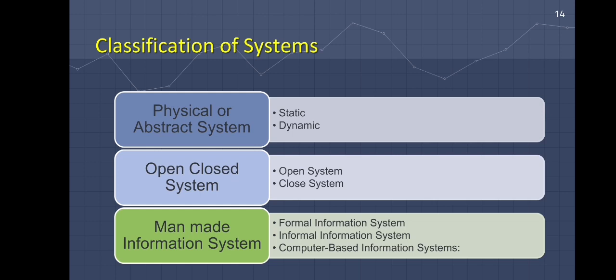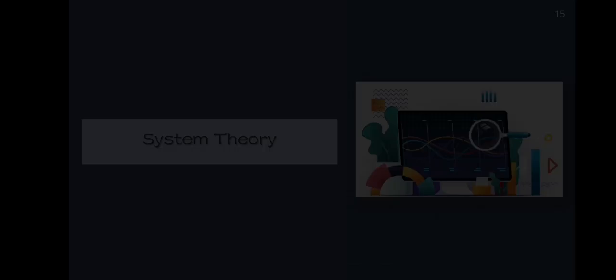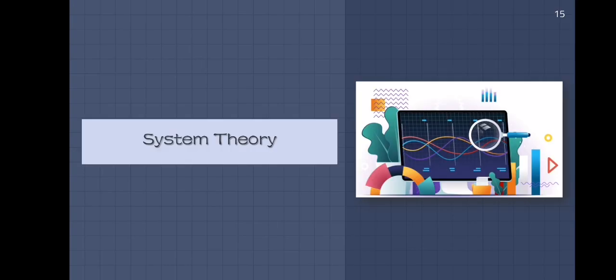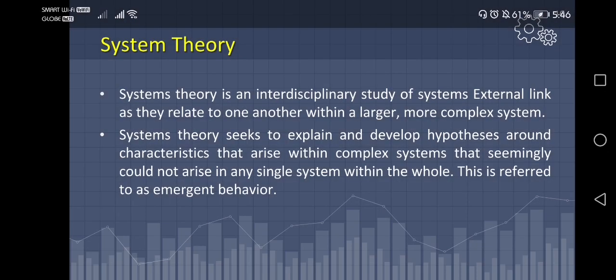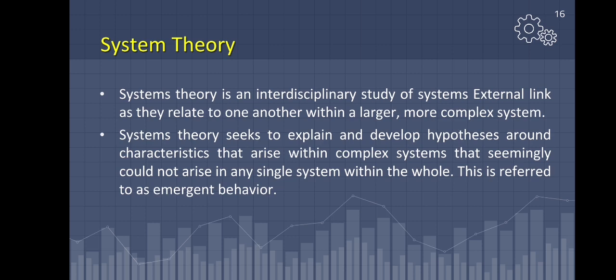Computer-based information systems. We now go to our last topic, which is system theory. System theory is an interdisciplinary study of systems as they relate to one another within a larger, more complex system. System theory seeks to explain and develop hypotheses around characteristics that arise within complex systems.